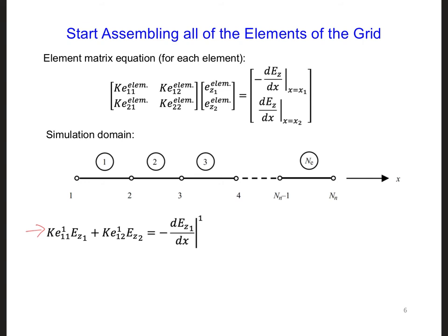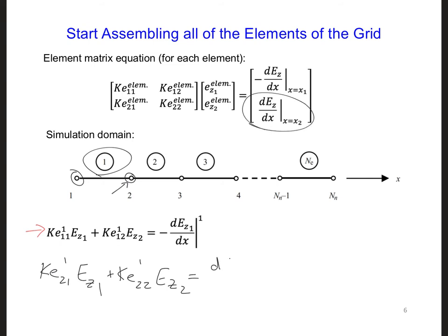Using the same approach for the second equation of element 1, corresponding to node 2, we get KE21 element 1 times EZ1, plus KE22 element 1 times EZ2. The right-hand side is DEZ/DX from element 1, evaluated at global node 2.